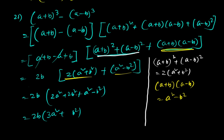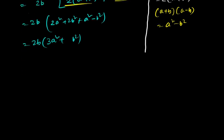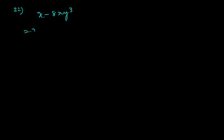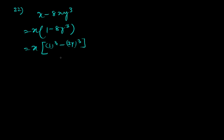Question 22: x – 8xy³ = x(1 – 8y³) = x(1³ – (2y)³) = x(1 – 2y)(1 + 2y + 4y²).